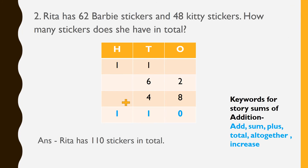I have taken another example from exercise number 4: Rita has 62 Barbie stickers and 48 Kitty stickers. How many stickers does she have in total? Here you can see the presence of the keyword total. Therefore, we have to add 62 and 48. You have to write the answer in this format: 62 plus 48.